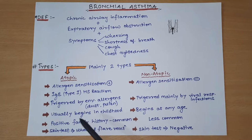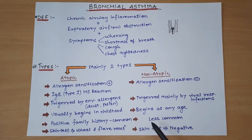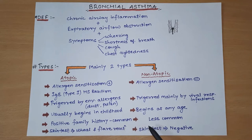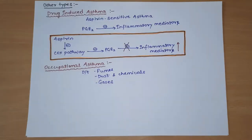Atopic asthma, again because of its genetic susceptibility, is common in patients with positive family histories, while in non-atopic asthma positive family history is less common. In atopic bronchial asthma, the skin test shows a positive result - that is, a wheal and flare reaction is seen - because of the hypersensitivity reaction to the allergen. In non-atopic asthma, the skin test is negative because the person is not sensitive to allergens.